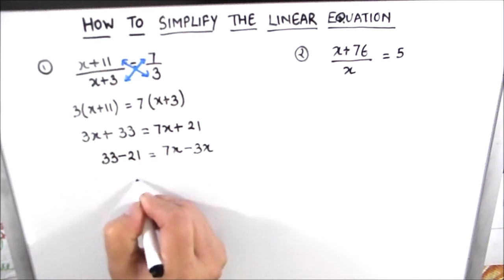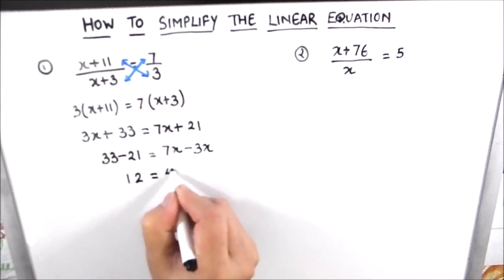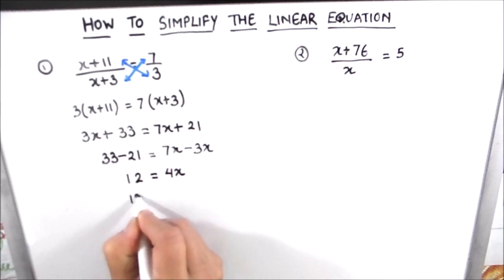So 33 minus 21 will be 12 and 7x minus 3x is 4x. Now to find the value of x we are going to divide both the sides of the equation by 4.